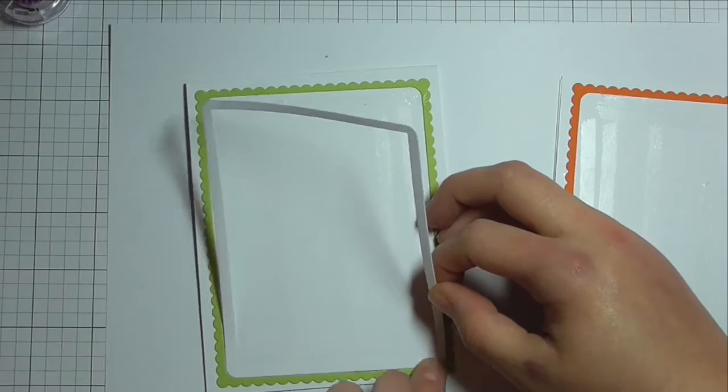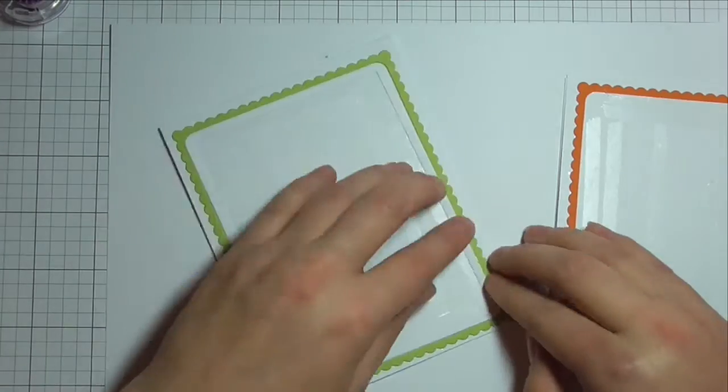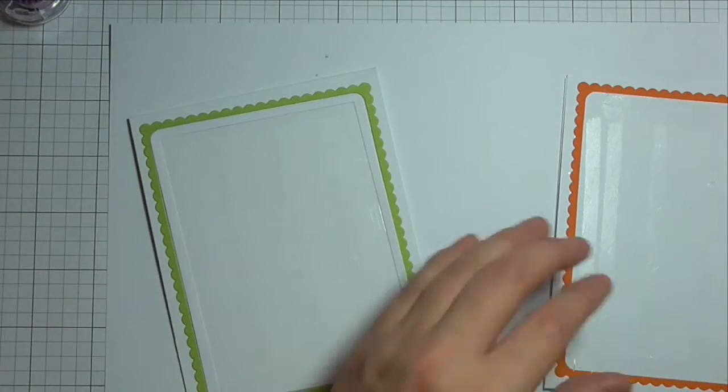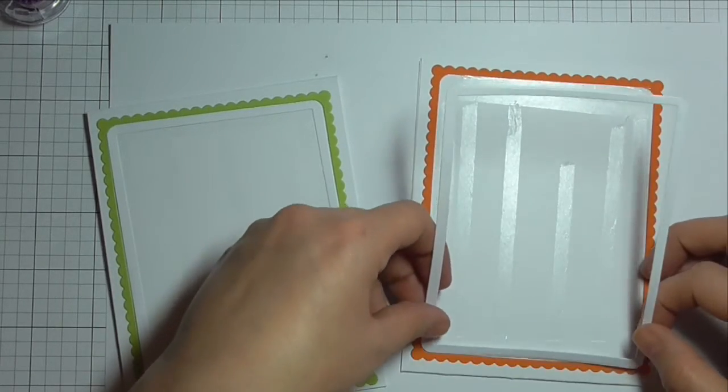So I'm going to place the white just inside here. Now you don't have to do this. You could leave this out but I like the way it gives almost like a one layer effect on the card when you inlay all of the pieces back in.